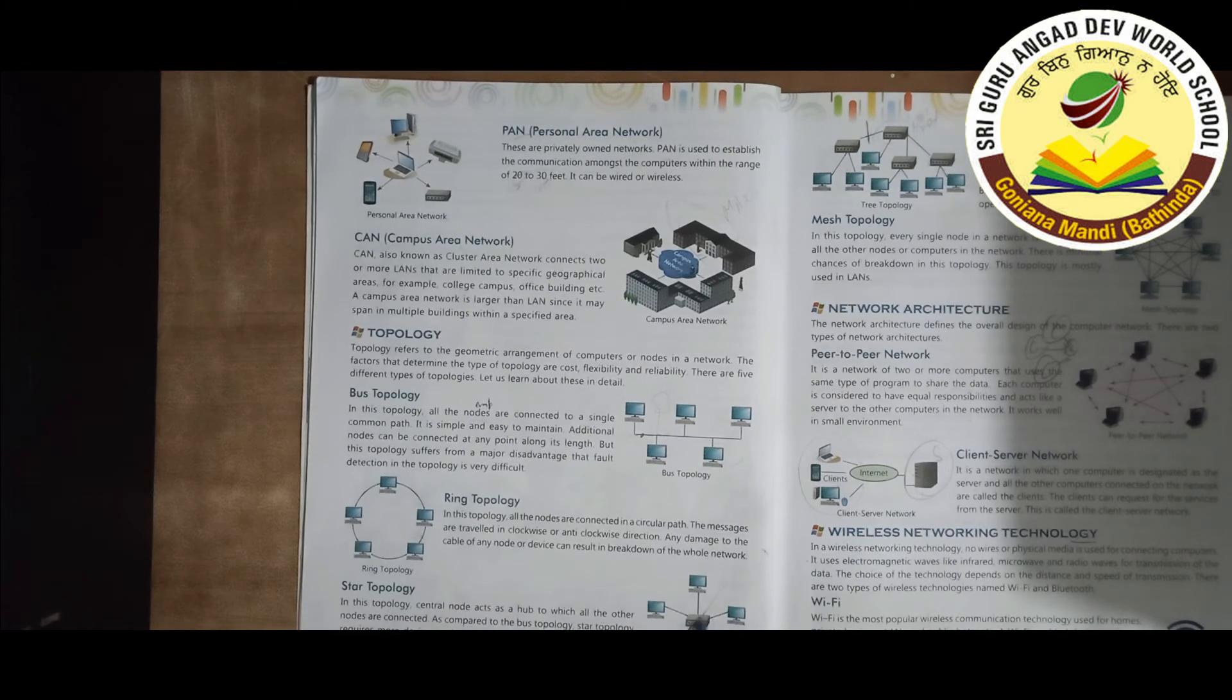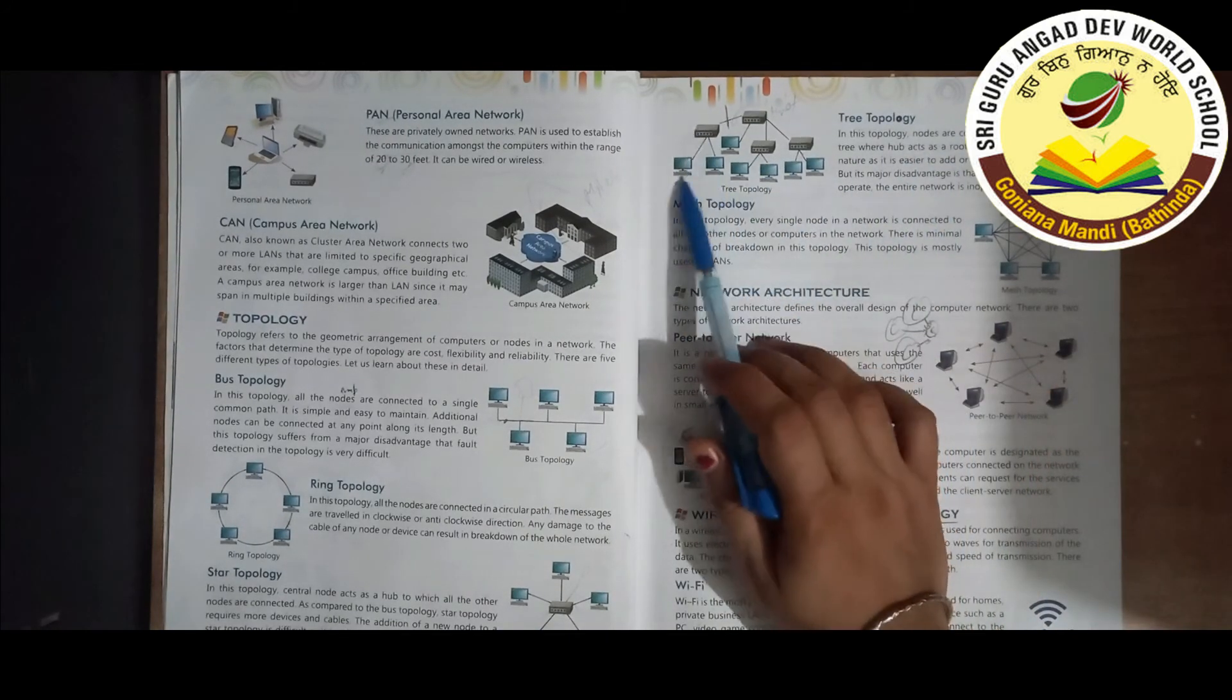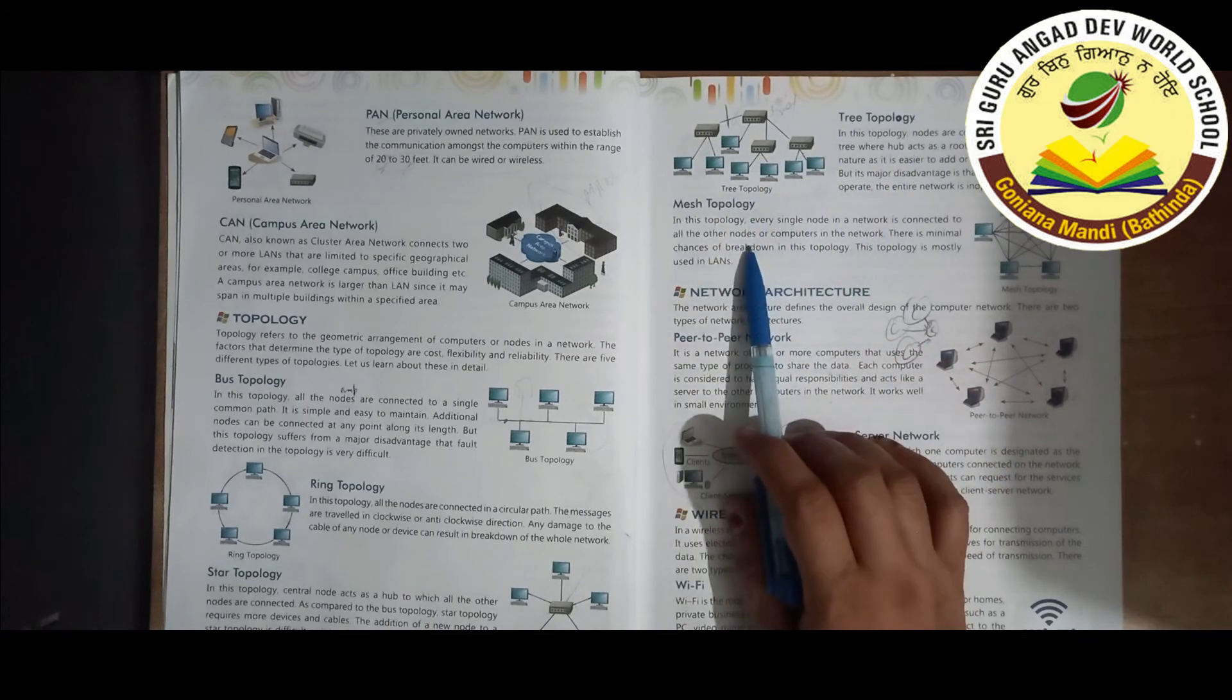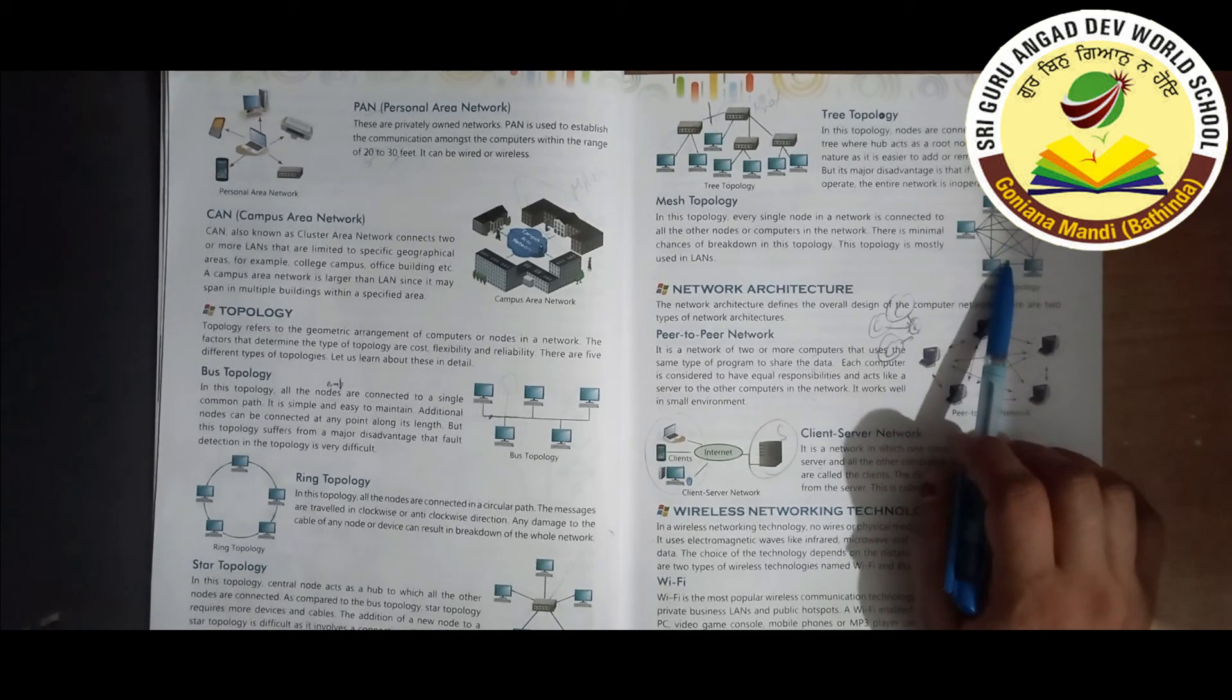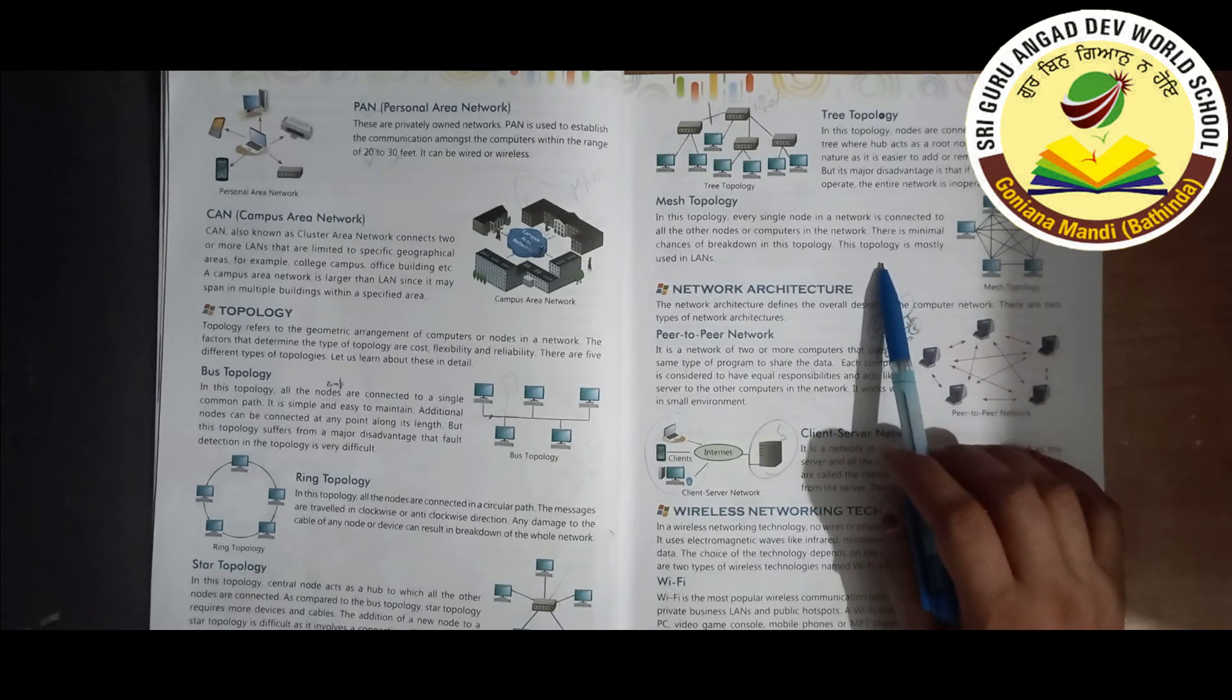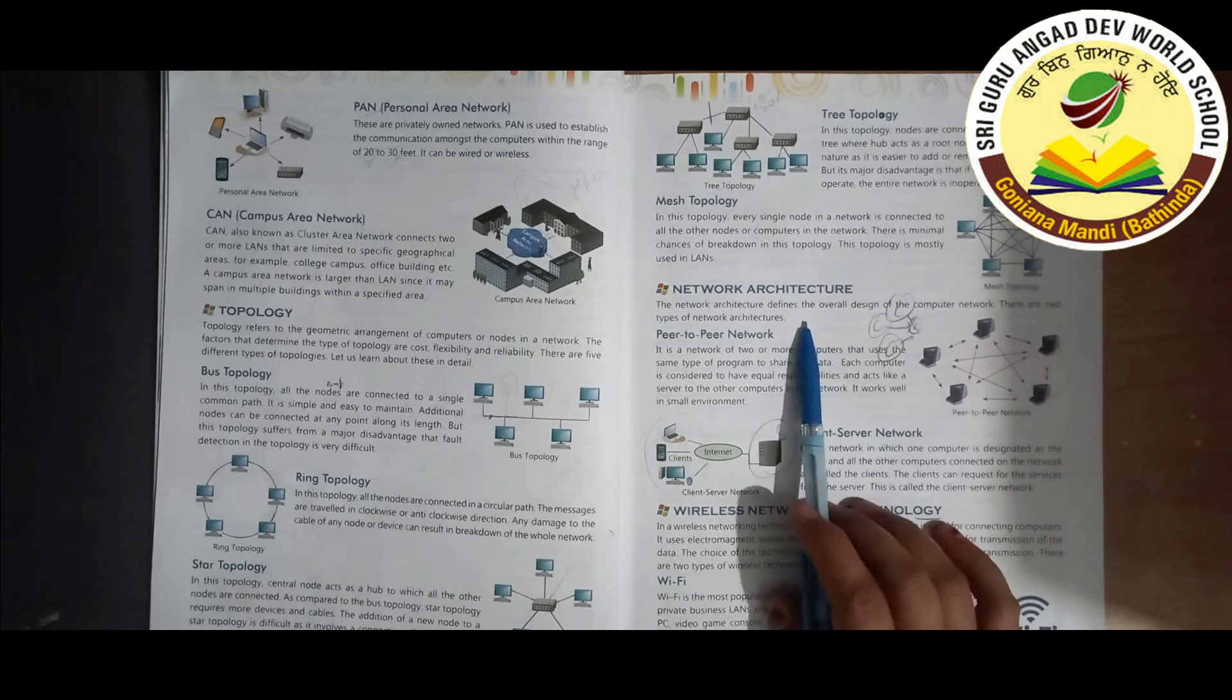This is the star topology, main hub in star form with nodes. Tree topology means tree structure. Mesh topology means every single node is connected to all the other nodes or computers in the network. There is minimal chances of breakdown in this topology. This topology is mostly used in LANs.